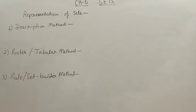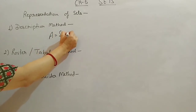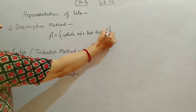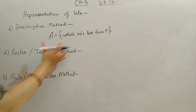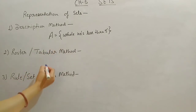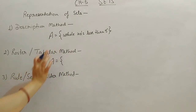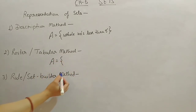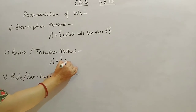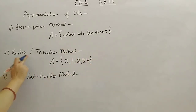In the description method, we write the description of the set. Suppose if we have a set A and this set is whole numbers less than 5 — that way of writing, where we simply describe our set, is called the description method. In the roster form, we write the elements within flower brackets. Whole numbers start from 0, and less than 5 means we go till 4. This way of writing is called the roster or tabular method.